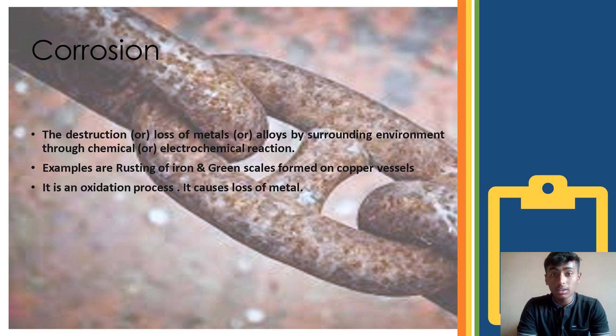Examples of rusting are the corrosion or rusting of iron, green scales formed on copper ridges, aluminum corrosion, or silver corrosion, the finishing of silver, etc. These are the corrosion you will see in day-to-day life or in our surroundings. It is also an oxidation process.